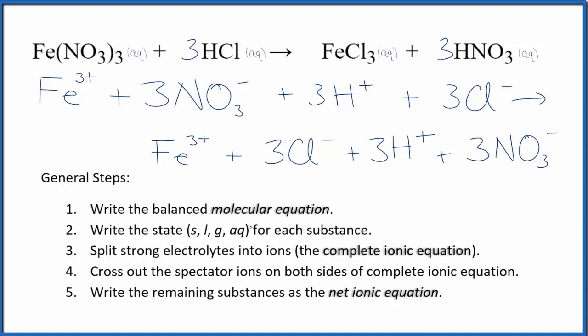In a net ionic equation, we cross out spectator ions. You'll note that we have the same ions here and here. So if we cross out spectator ions, we cross these out. Three nitrates, three nitrates, three hydrogens, three hydrogen ions, three chloride ions. Everything crosses out. Everything was a spectator ion.